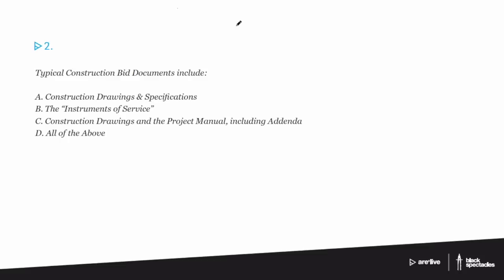A typical project starts, goes through SD — schematic design — then DD — design development — then CDs, then a bidding phase, then construction administration, and then an end game of warranties and other issues. The contracts will have these five main categories built in, and you don't have to do all of them. Some owners say they'll be fine with construction and don't need you for that part, or they might only want DD and CDs. But the standard is you're going to do all five plus the beginning and end.